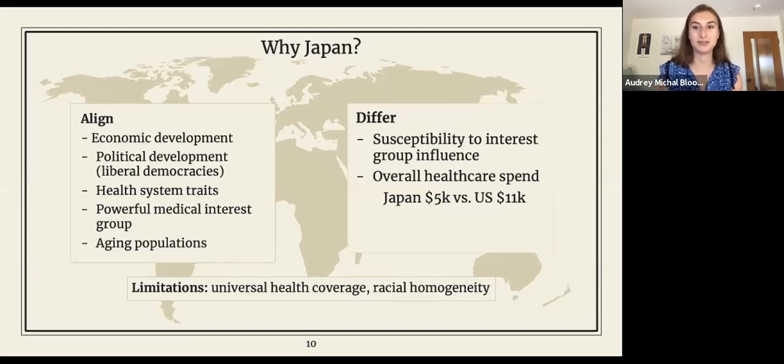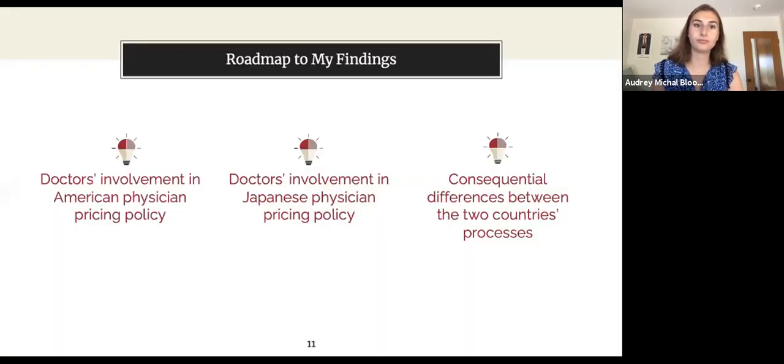Every country has to deal with this problem of how to provide care to people when they need it, how to regulate it, and how to finance it. For that reason I chose to compare the process the United States uses to set prices for physician services with the process Japan uses to do the same thing. That may seem like a random choice, so I'm going to defend it. There's no perfect country to compare the United States with because it is such an outlier. But Japan is a good comparator. I chose Japan because on a whole series of dimensions the United States and Japan align, and on the variables most crucial to this research - namely susceptibility to interest group influence and overall health system spending - they differ.